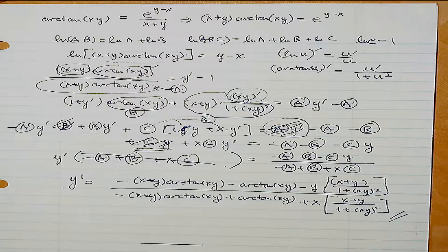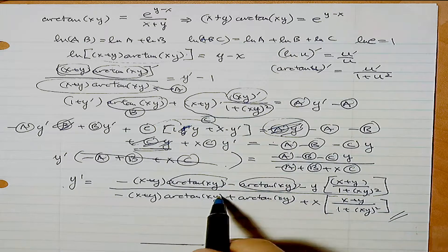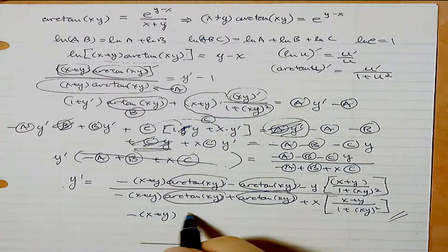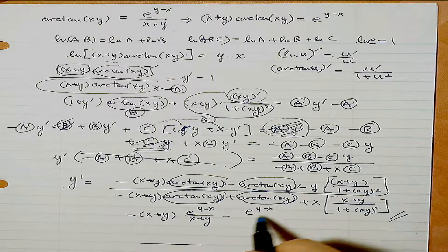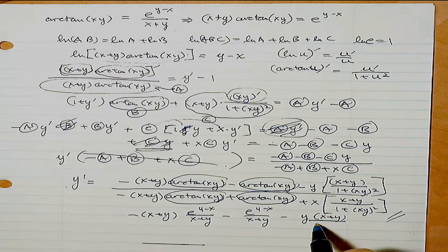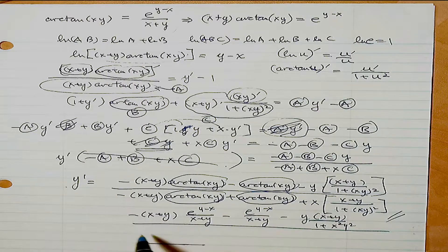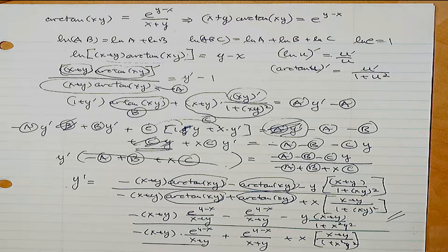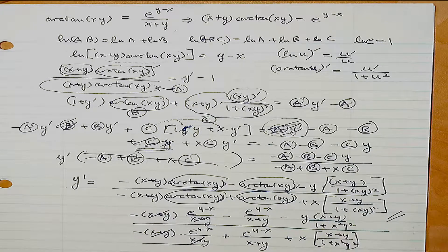That's one way of doing it. In the provided answer, they replaced all the arctan(xy) terms using the original equation. So arctan(xy) gets replaced by e^(y-x)/(x+y), giving expressions involving e^(y-x)/(x+y) throughout numerator and denominator. Some terms cancel, and you can factor out e^(y-x) to get a common denominator. The answer is the same either way.